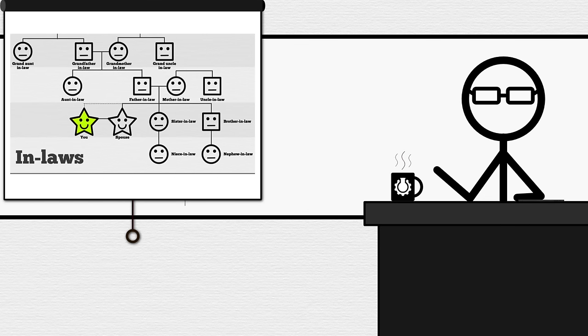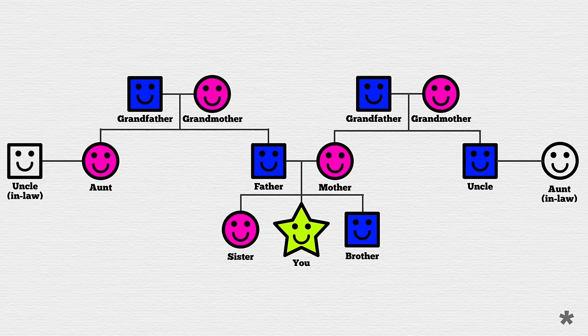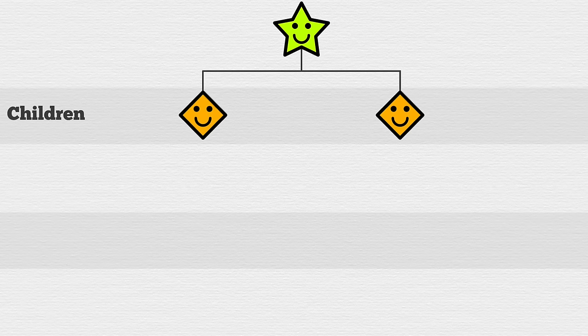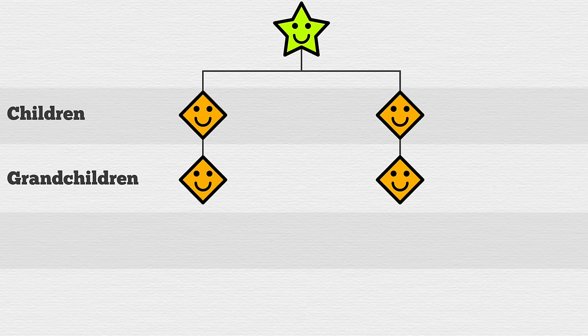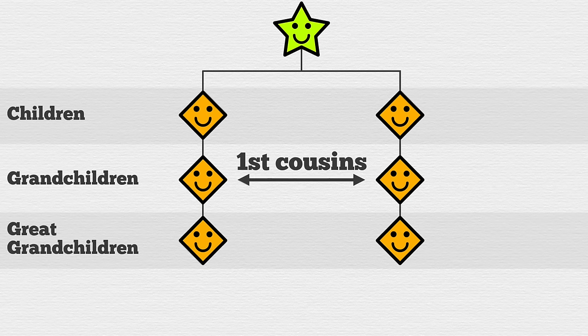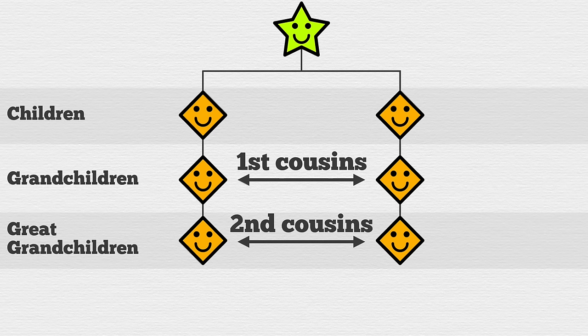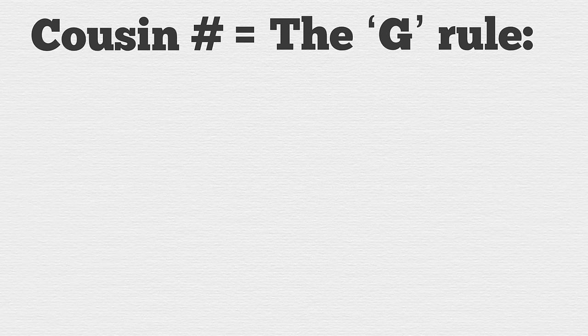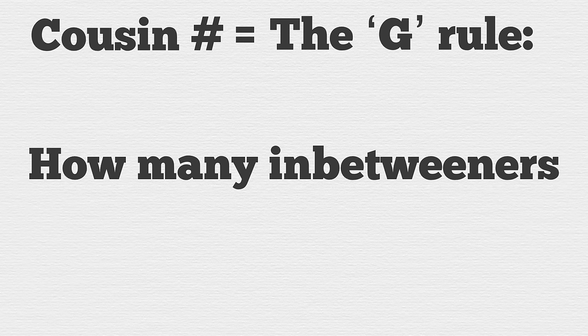It's on to the reason you're probably watching this video: cousins. Your aunt and uncle's children are your cousins, but there are many kinds of cousins, and to better understand them we need to simplify this family tree and think downward. Your grandchildren are first cousins to each other, and their children — your great-grandchildren — are second cousins to each other, and so on. The cousin number is the same as the G rule: it tells you how many in-betweeners until the connection on the family tree.